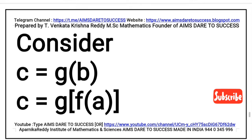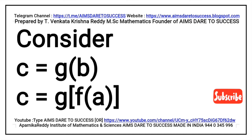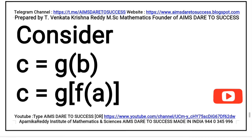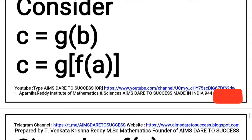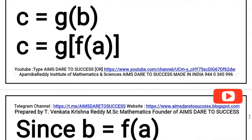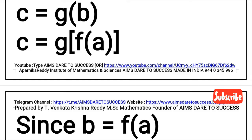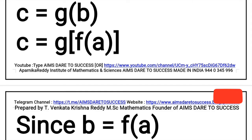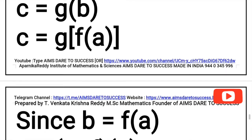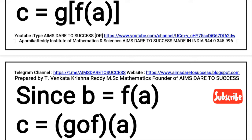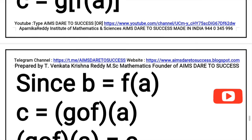Using these values, consider c equals G(b). Since from F mapping from A to B we have F(a) equals b, we substitute b equals F(a) into c equals G(b), giving c equals G(F(a)). Removing the bracket notation gives c equals G circle F of a.